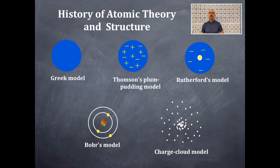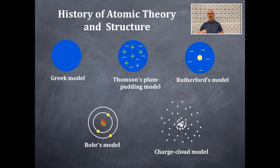Then we have the charged cloud model, which is a further redevelopment of the model of the atom. It is much more well defined, and this model works well for all atoms. The Bohr model only worked for hydrogen, and that was the problem. So Schrödinger came up with another model for the atom using quantum mechanics, which is beyond this course.